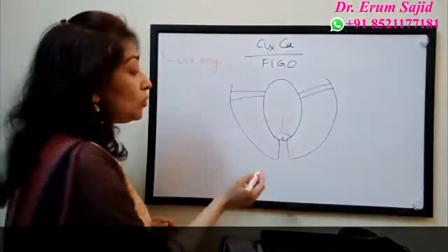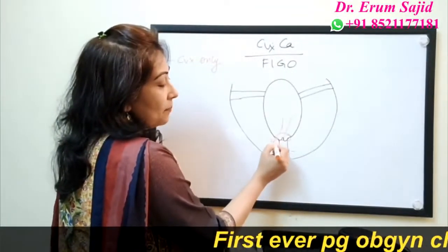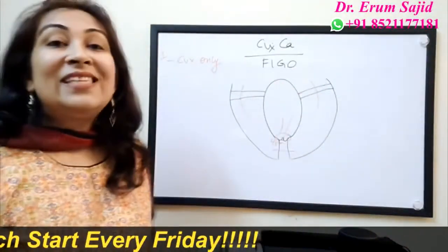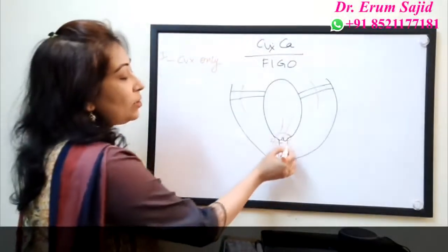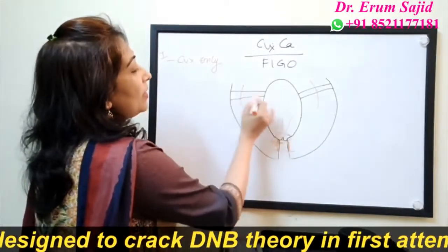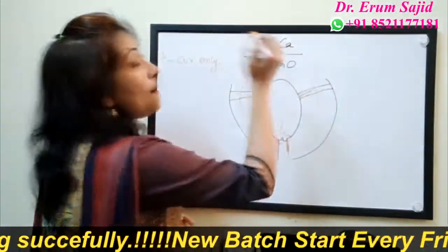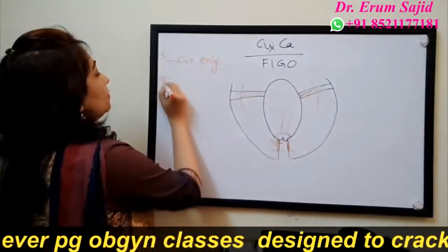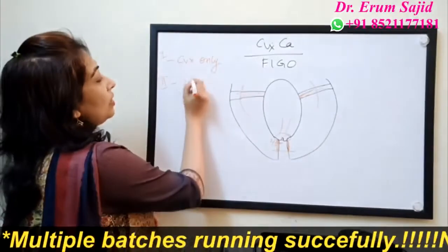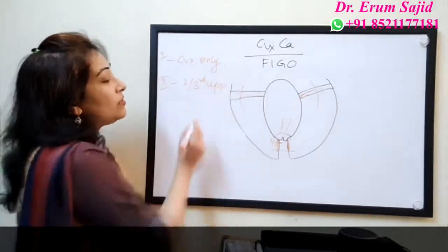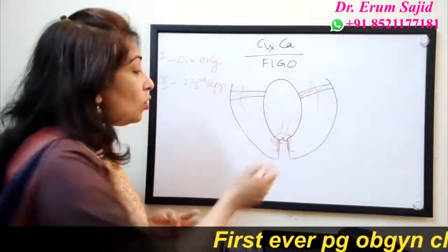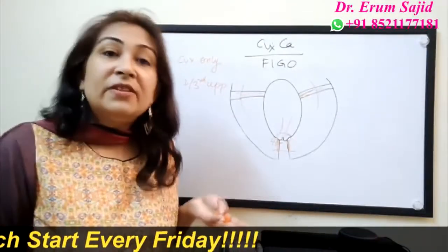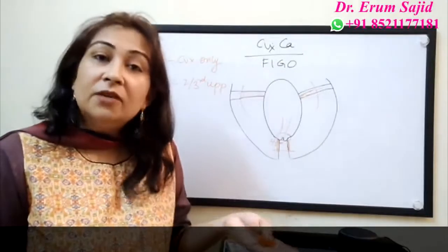What is stage two? After spreading within the cervix, where will the cancer go? It will go to the upper two-thirds of the vagina or the parametria. Stage two is when it has gone into the upper two-thirds vagina or invaded the parametria, but has not yet reached the pelvic sidewall. I say upper two-thirds vagina because that's where it goes — right around the cervix, in close proximity to the upper vagina.